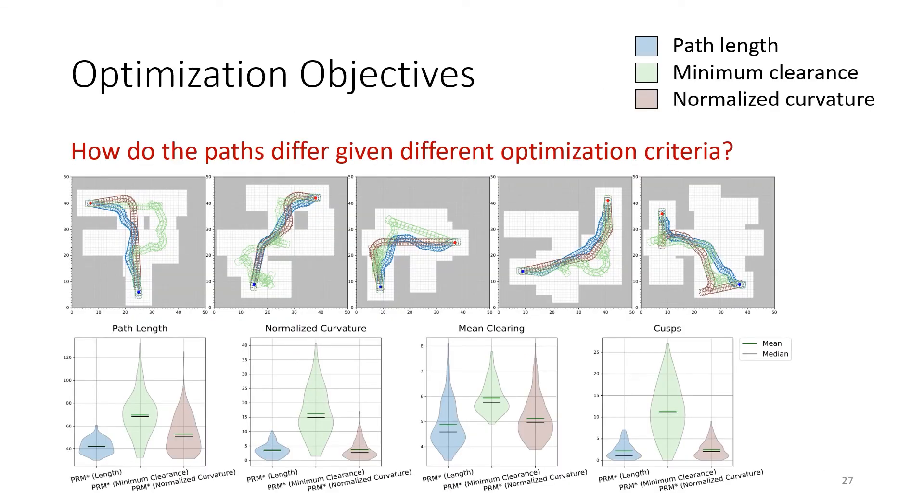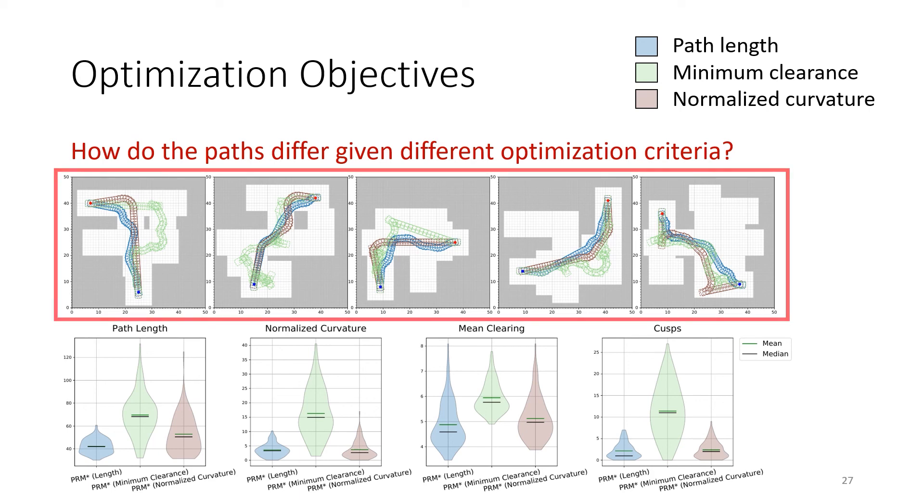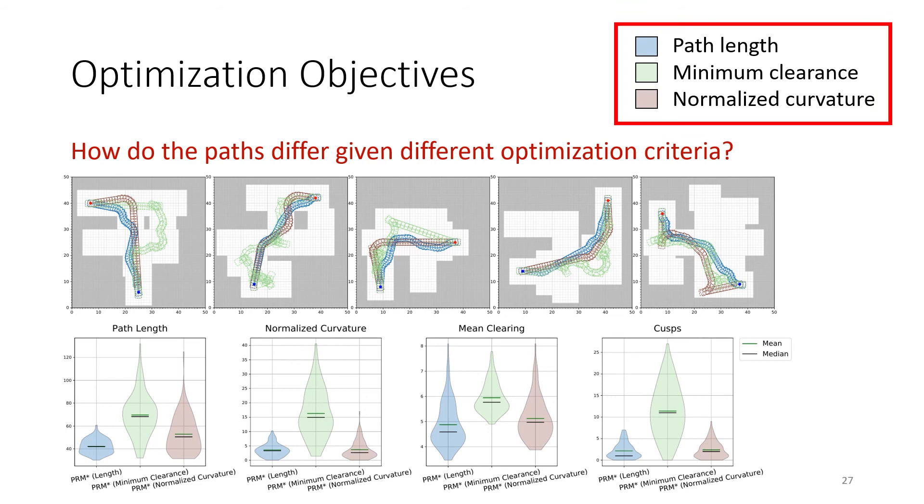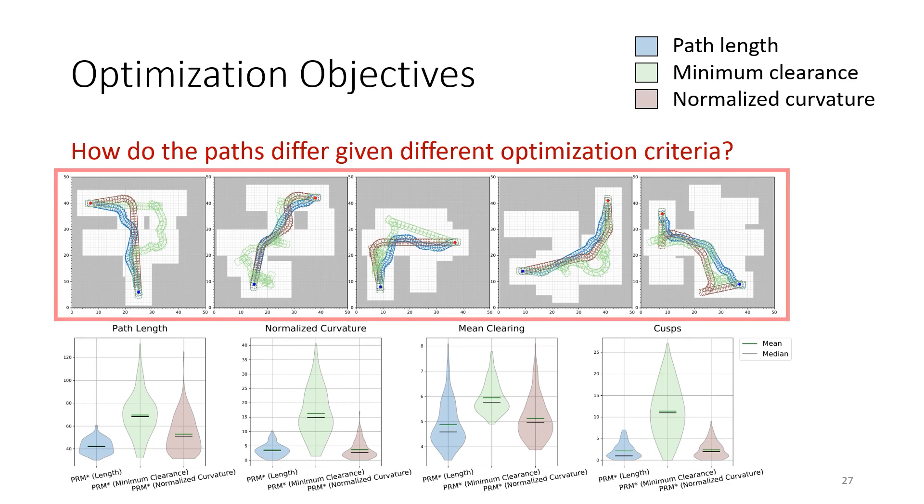In our final experiment, we show how BenchMR allows us to analyze the behavior of a sampling-based algorithm by varying the optimization criterion it is using. In the top row, we visualize the trajectories resulting from three different optimization criteria: path length, minimum clearance, and normalized curvature. These solutions have been found by PRM-STAR and evaluated on five different procedurally generated corridor environments.